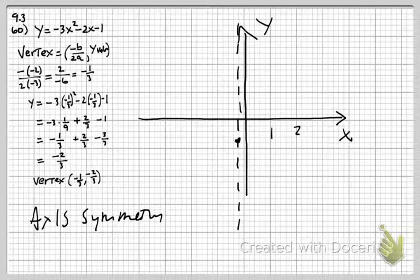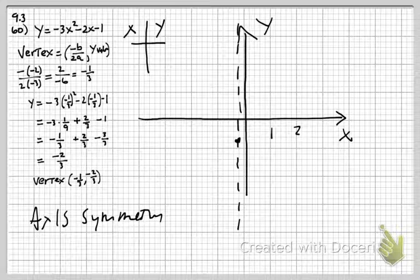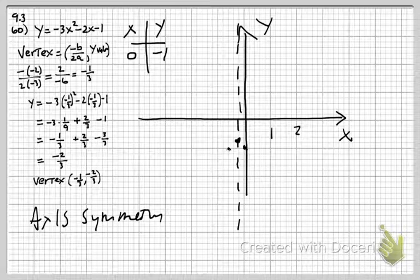Now I'm just going to plot some points, so I'll make a little t-chart. I'm going to plug in 0 for x. When I plug in 0 for x, I'm going to get 0 minus 0 minus 1, so negative 1 is my y-value. I'll go to 0 on the x and negative 1 on the y and graph that point. Then using my symmetry, I know I'm going to have another point the same distance on the other side of the axis.